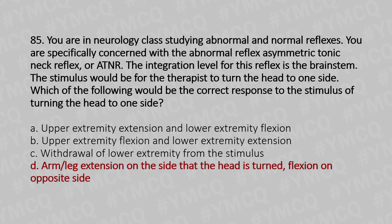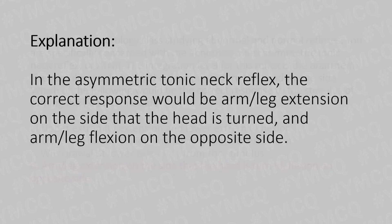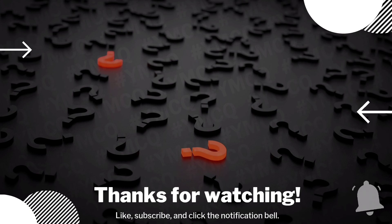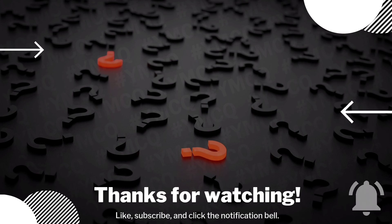In the asymmetric tonic neck reflex, the correct response is arm or leg extension on the side that the head is turned, and arm or leg flexion on the opposite side. That's all for today. If you need further clarification, check the description box and leave your feedback in the comment box. If you like this MCQ session, please subscribe to this channel for more videos. Thank you.